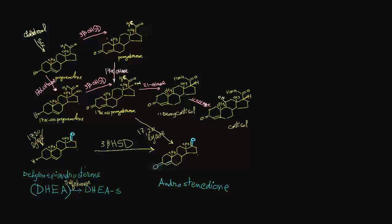In the adrenal cortex, these androgenic products — DHEA, its sulfated product, and androstenedione — have minimal androgenic activity. They are preferably converted into the more potent androgens, testosterone and dihydrotestosterone, in peripheral tissues. Minimal amounts of testosterone can be produced from androstenedione in the adrenal cortex.